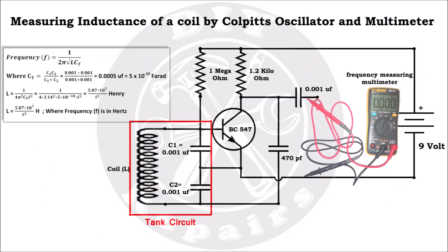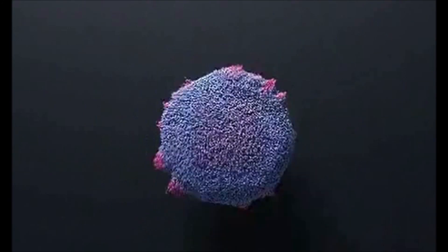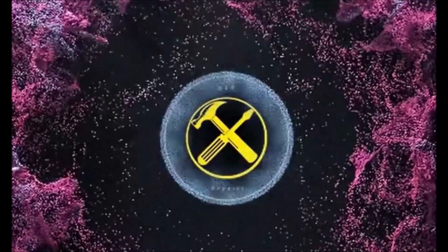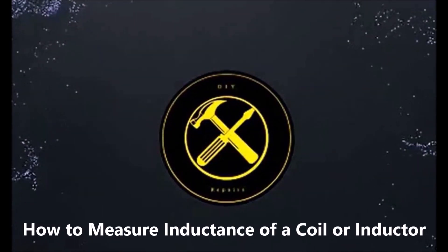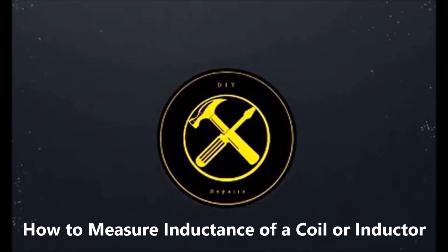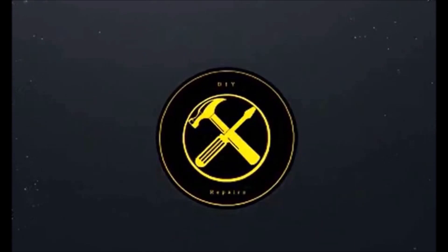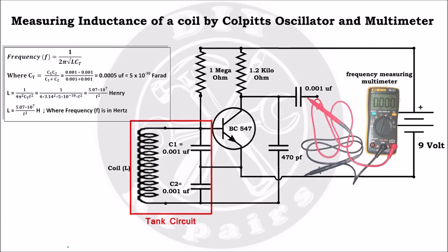Today we will calculate the inductance of any coil with the help of a Colpitts oscillator circuit and a frequency-measuring multimeter. So let's see the circuit diagram of the Colpitts oscillator. This is the simplest and working circuit diagram of the Colpitts oscillator.